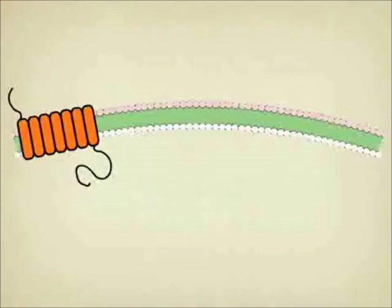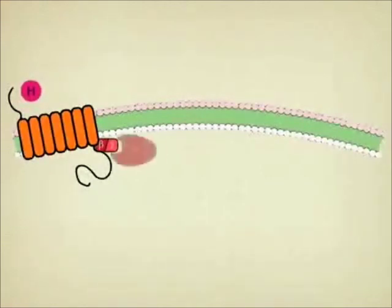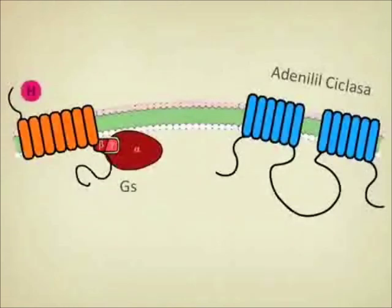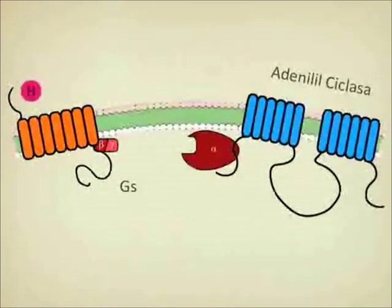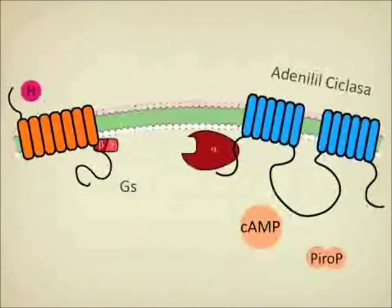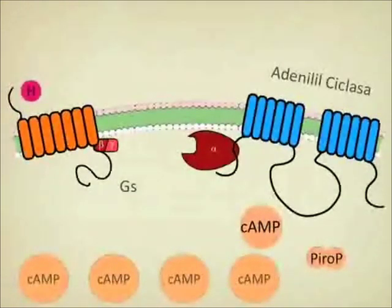We have our receptor, we have the hormone, and our protein Gs — which in this case is stimulatory — is coupled to adenylate cyclase with its transmembrane parts and three intracellular parts. The alpha subunit of protein Gs will bind to one of those intracellular parts and, using the energy from ATP, will convert it to cyclic AMP and pyrophosphate. The importance here is that this process increases the amount of cyclic AMP in our cells.